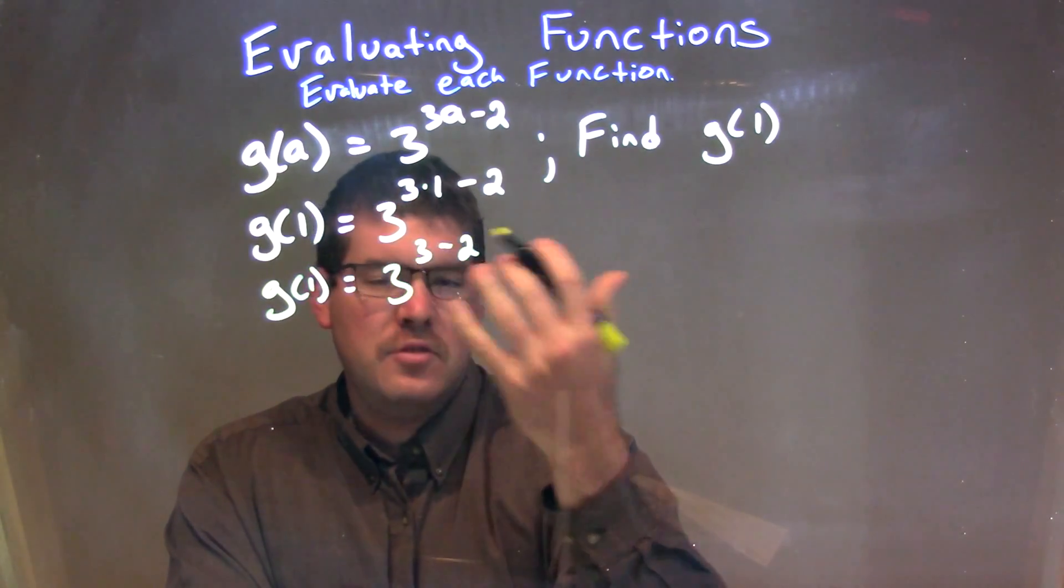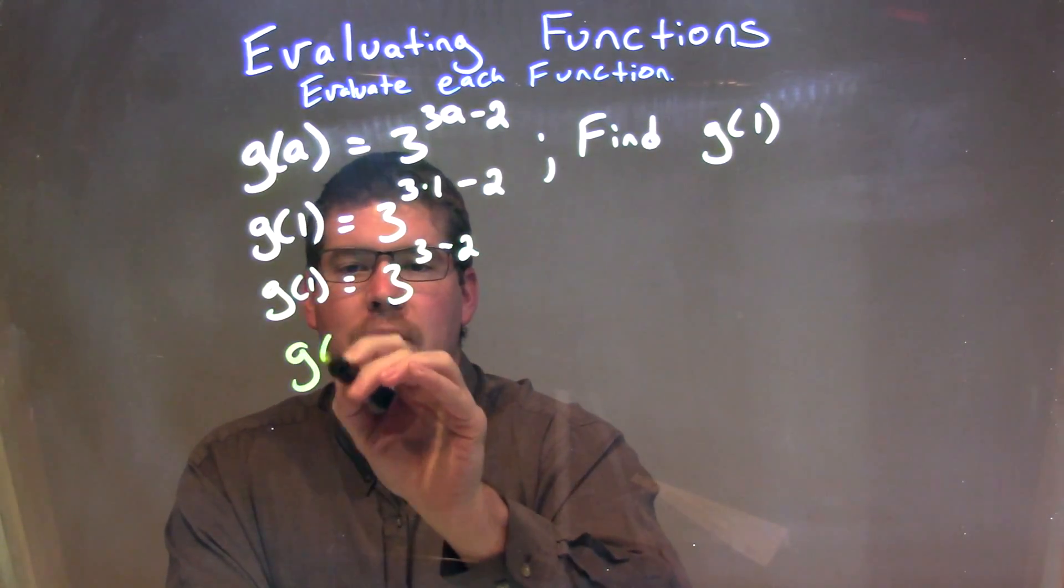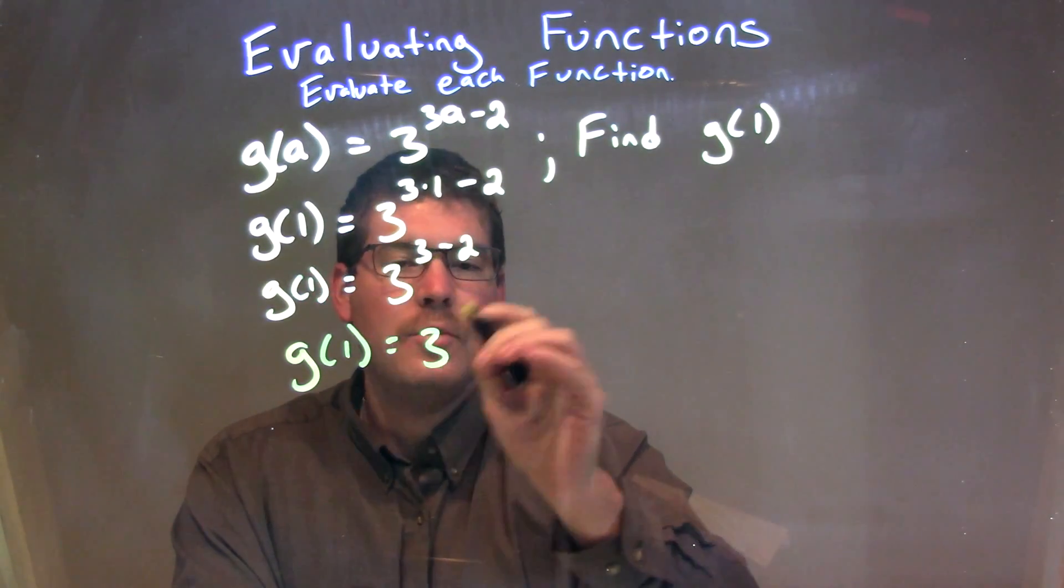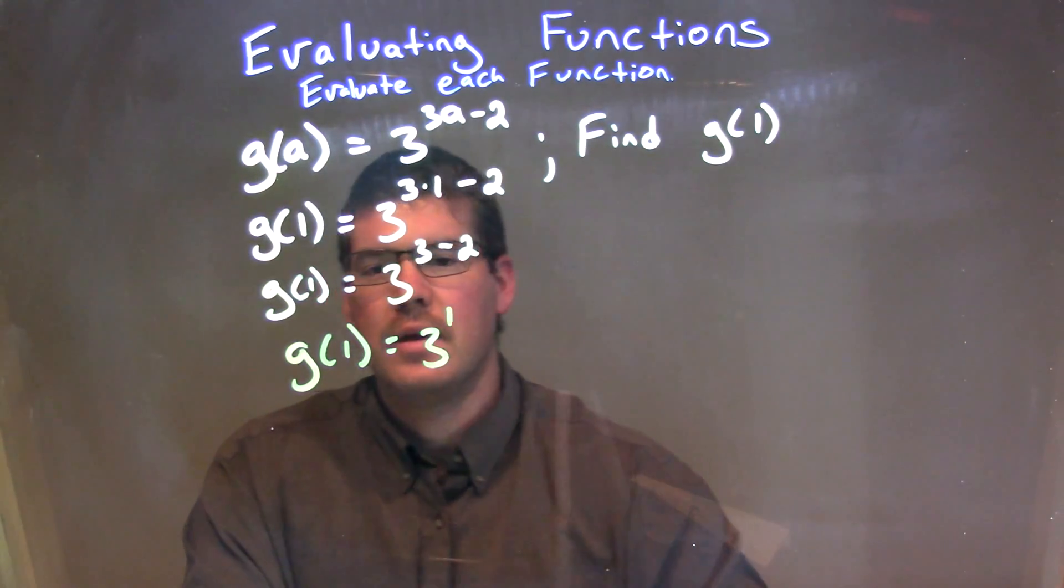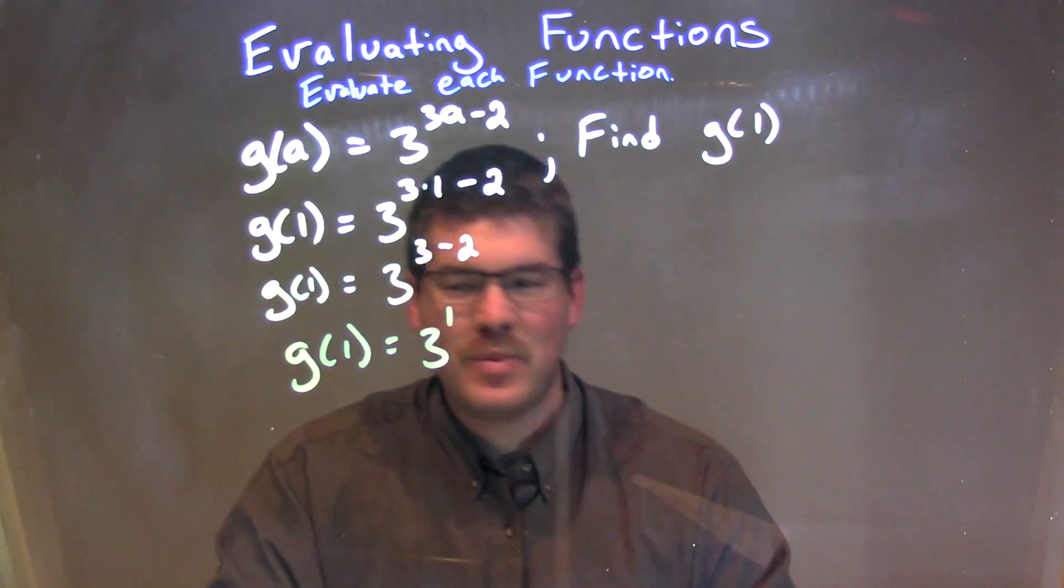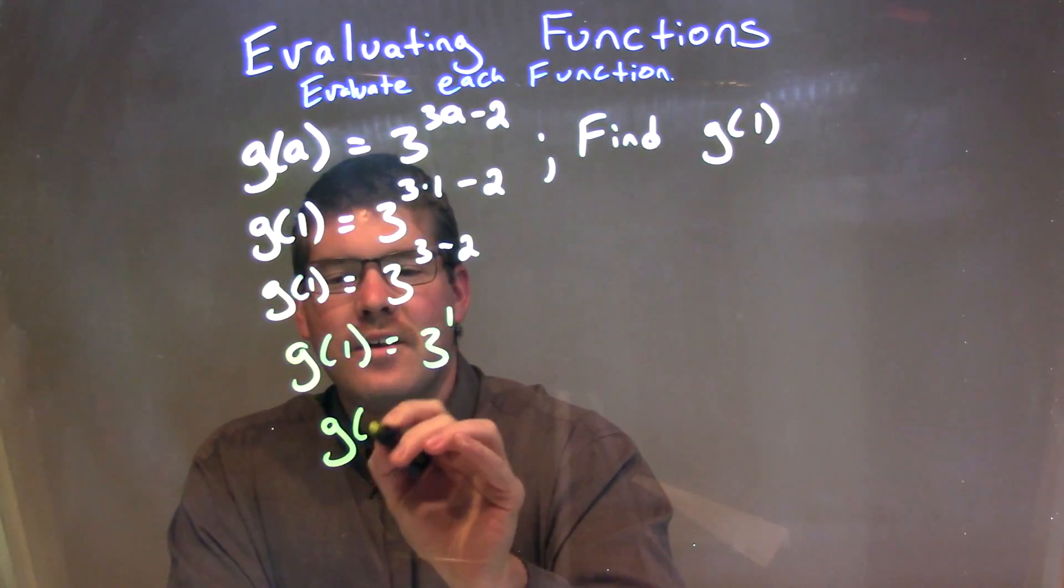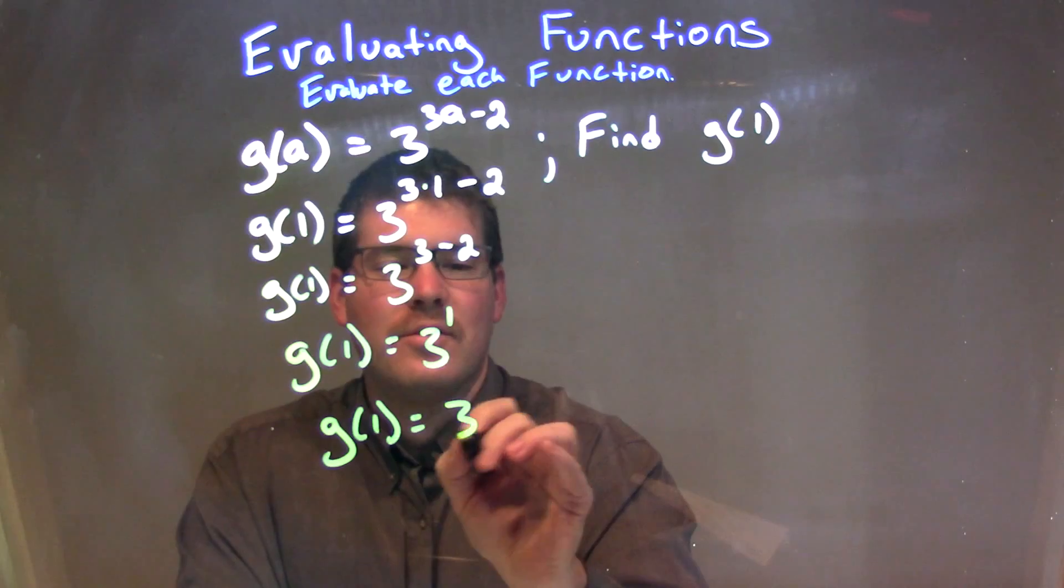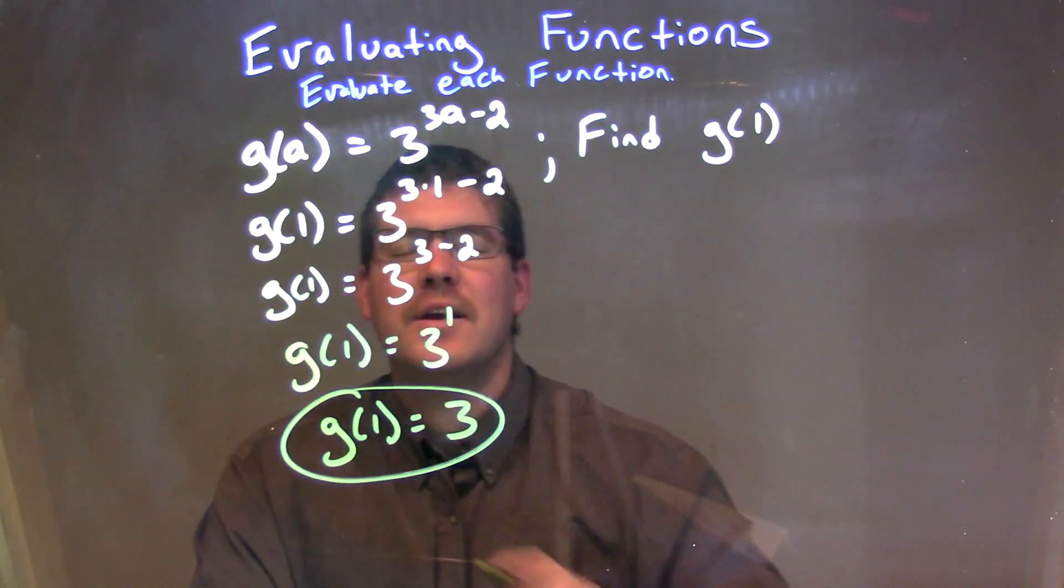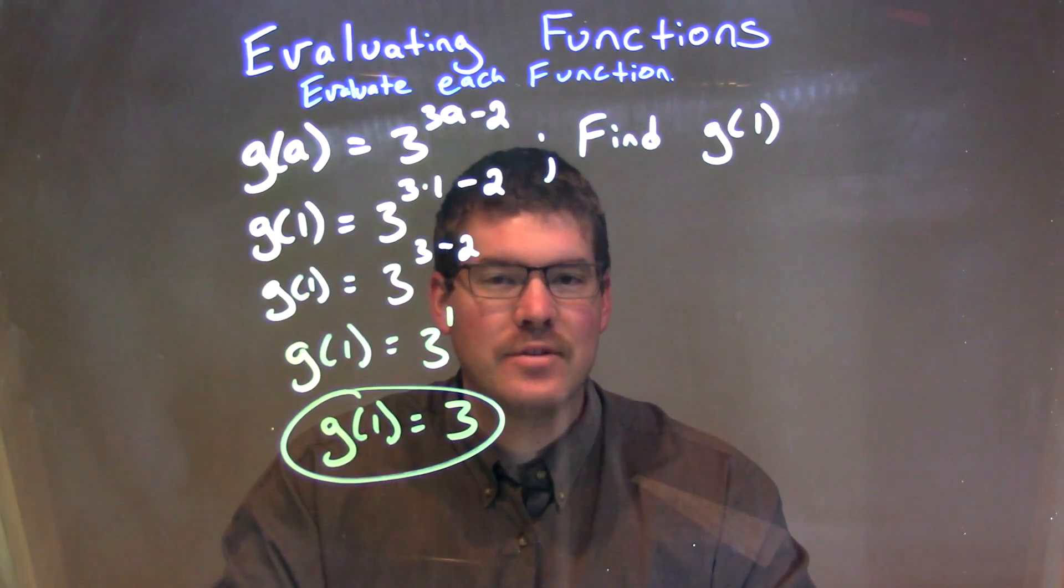And then 3 minus 2, we can subtract to be 1. So we have g of 1 is just 3 to the 3 minus 2 power, which is a 1. And we all know what 3 to the 1st power is. g of 1 is equal to just 3. And so our final answer here is g of 1 is equal to 3.